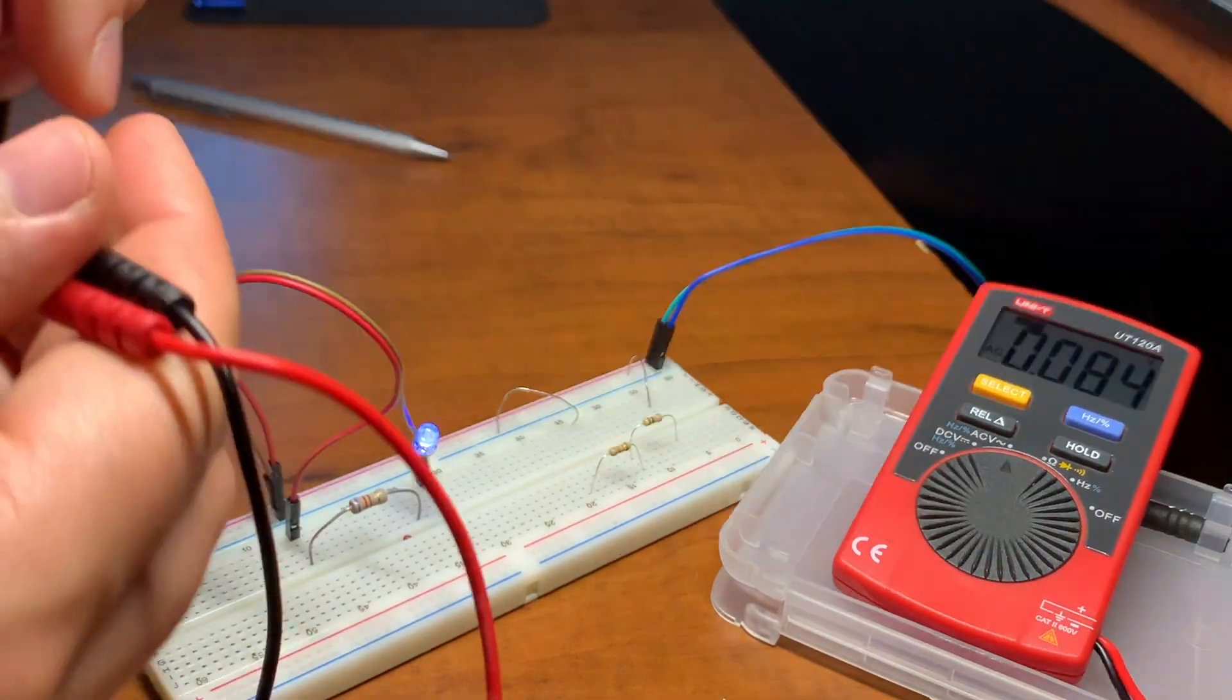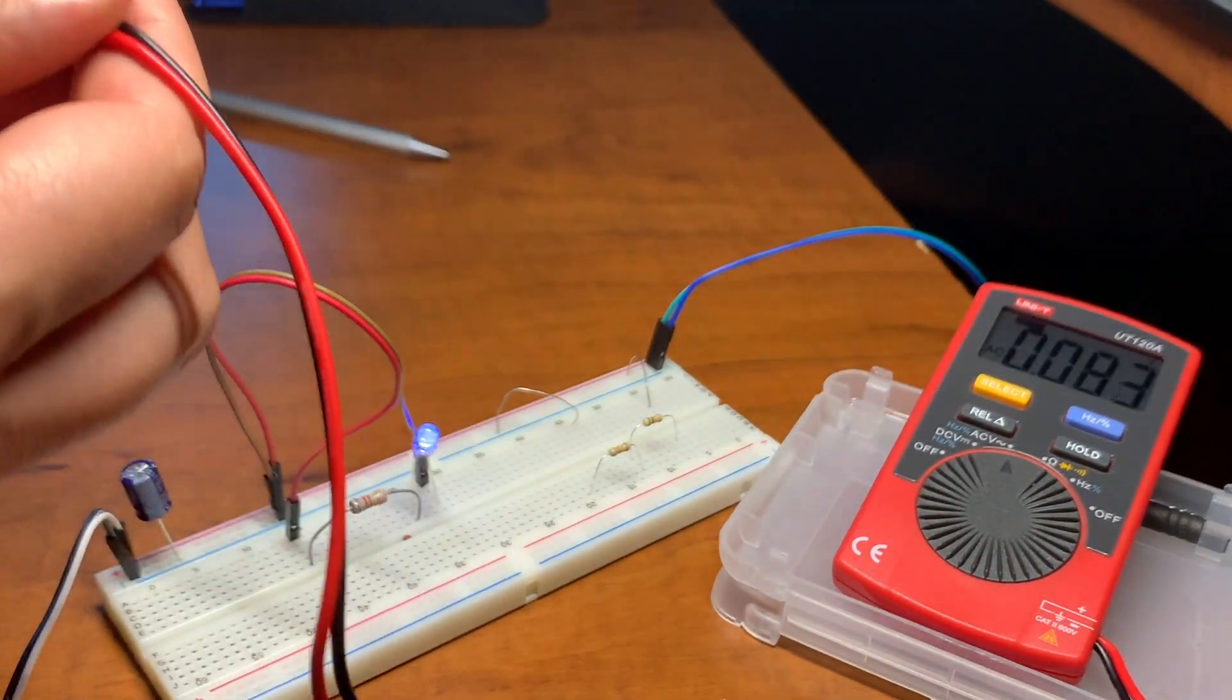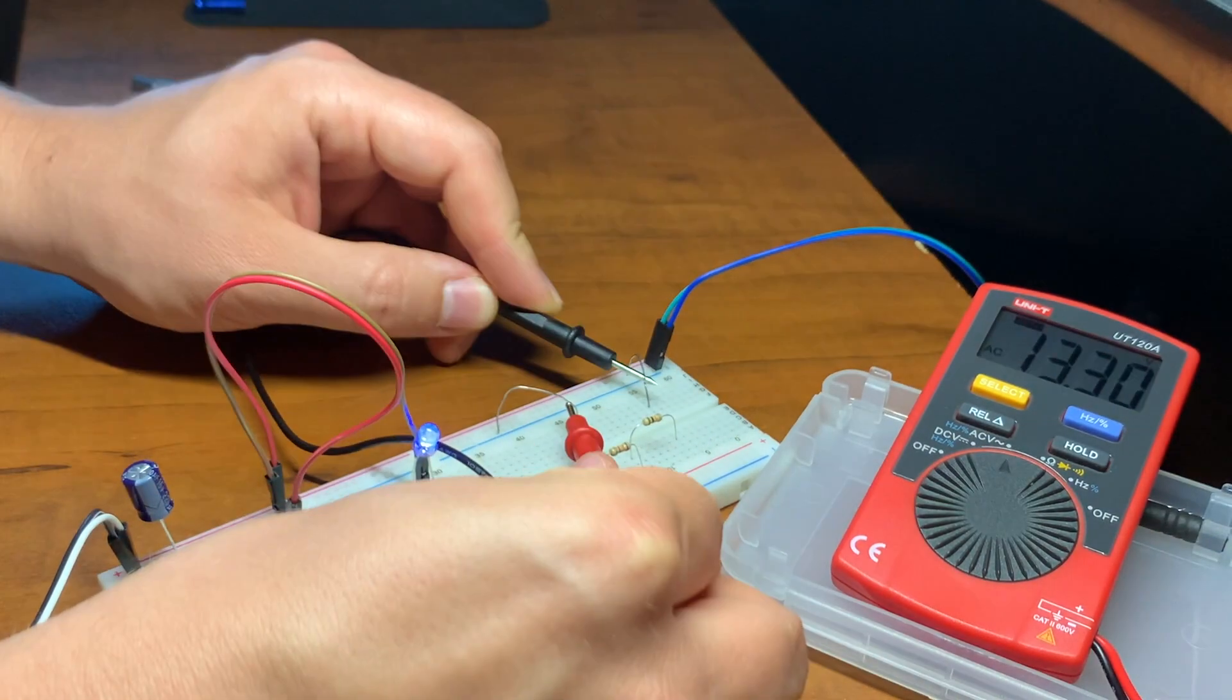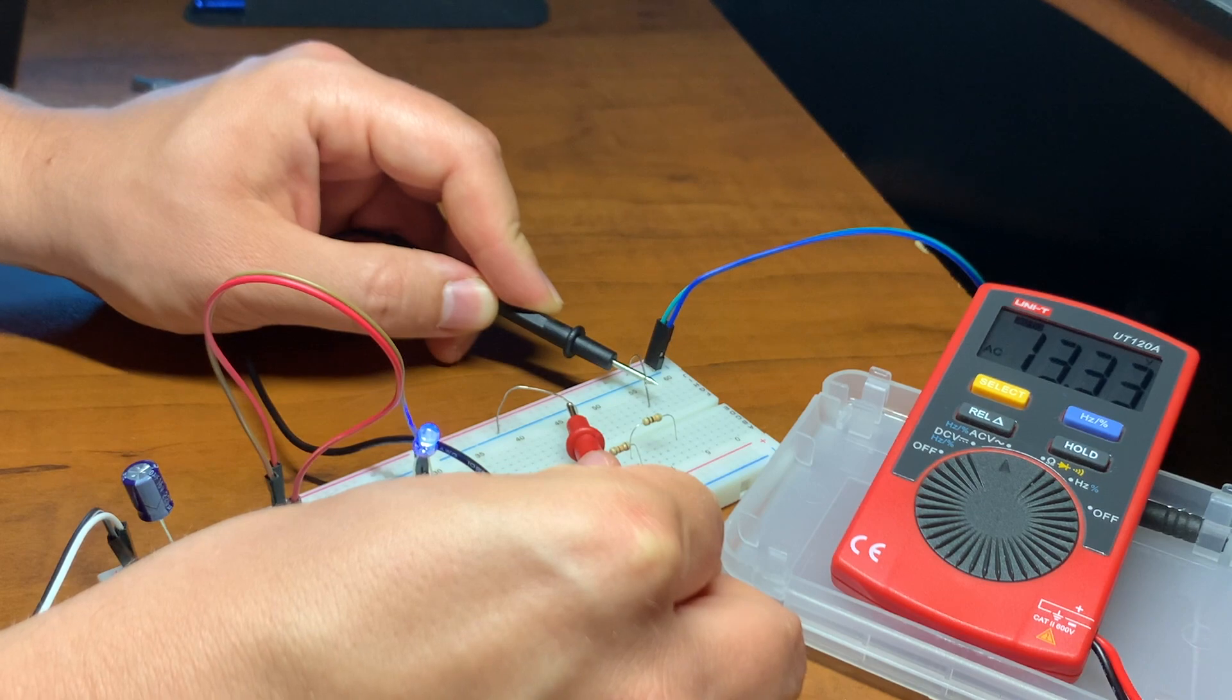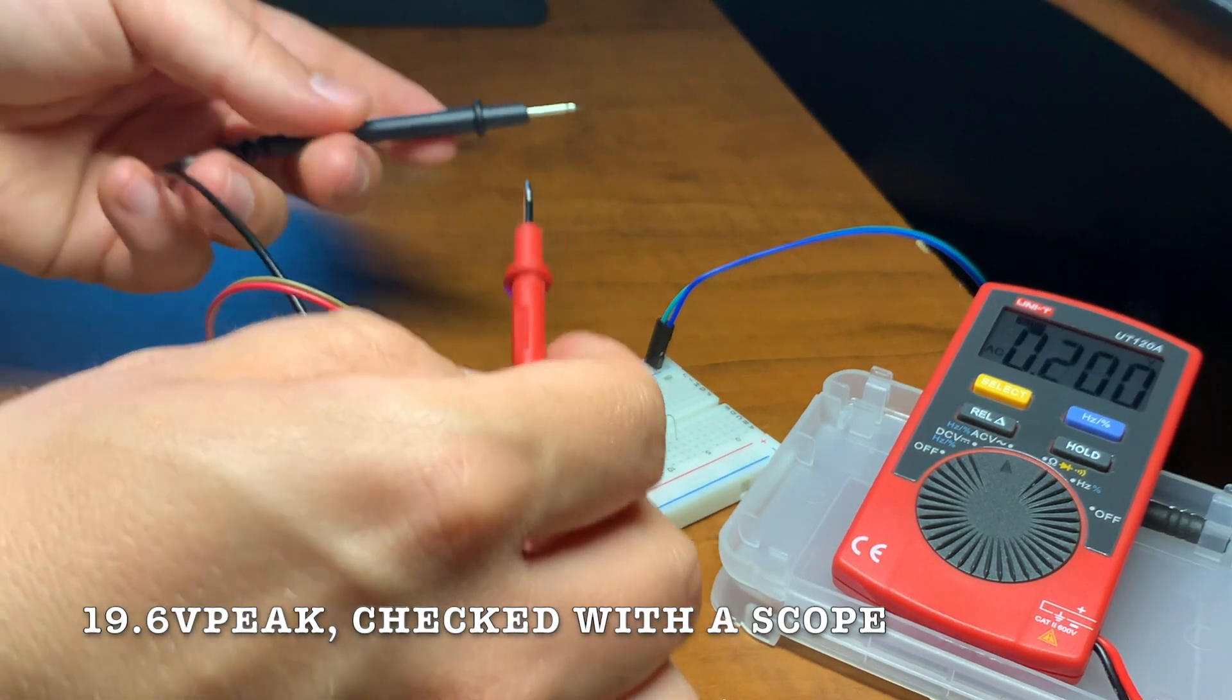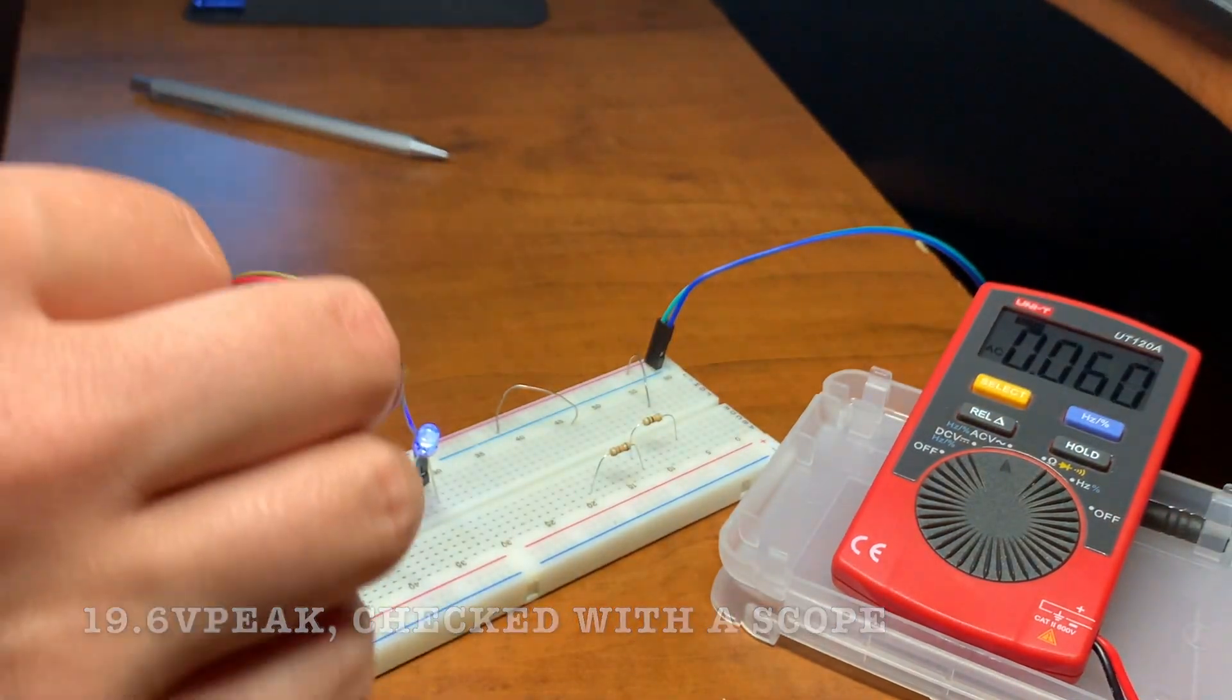Now for measuring AC. You can see it's already picking up some noise so it'll be off by a few millivolts if you're measuring AC. It's measuring 13.33 volts. The power supply is actually rated as 9 volts but I suspect it has a bit higher output.